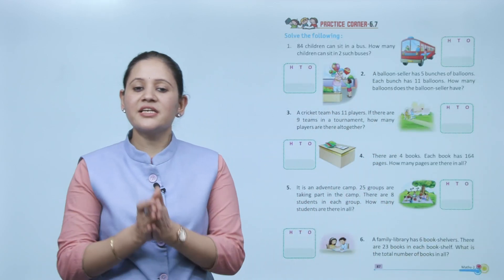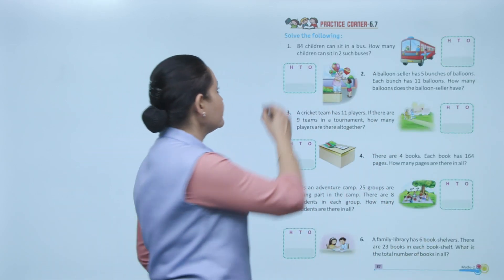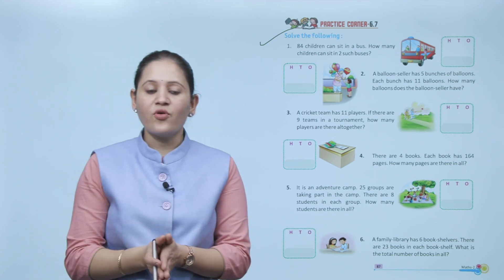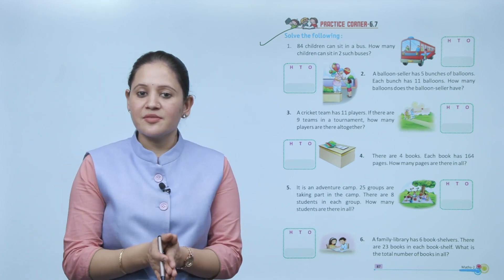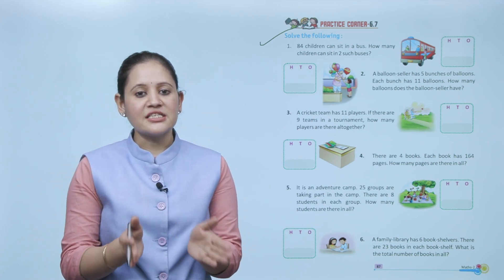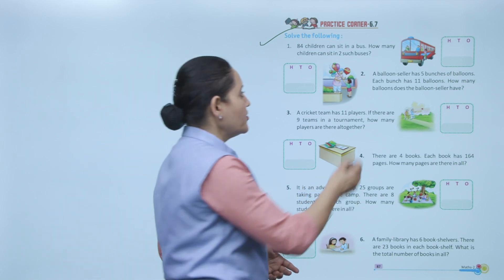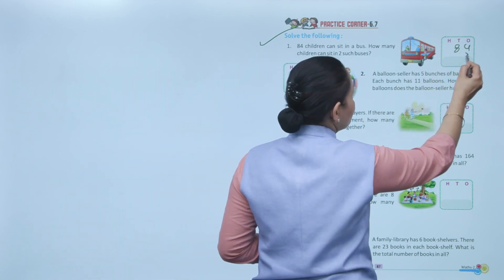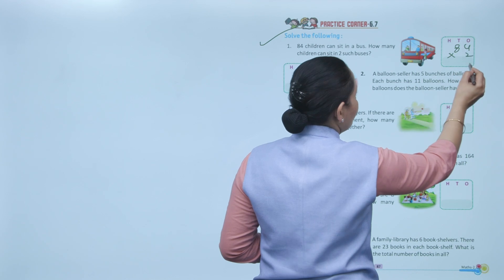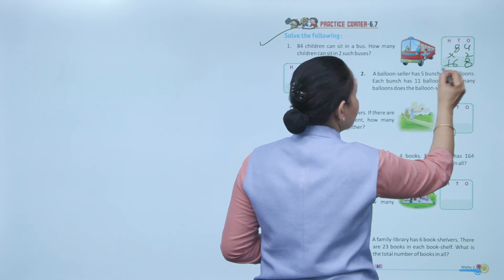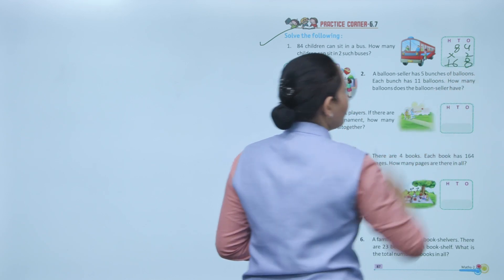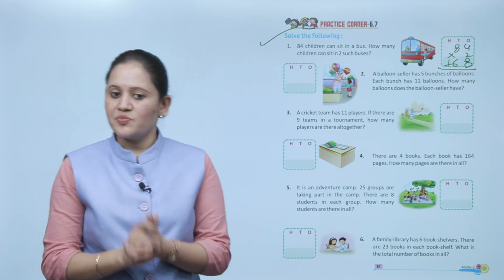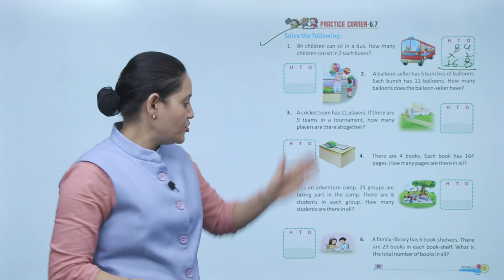Practice Corner 6.7: Solve the following. 84 children can sit in a bus. How many children can sit in 2 such buses? Multiply 84 by 2 — 4×2 equals 8, 8×2 equals 16 — so total 168 students can sit in two such buses.